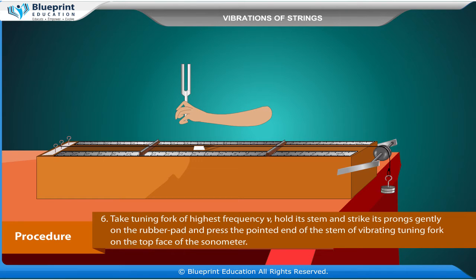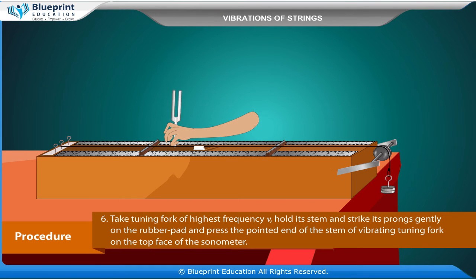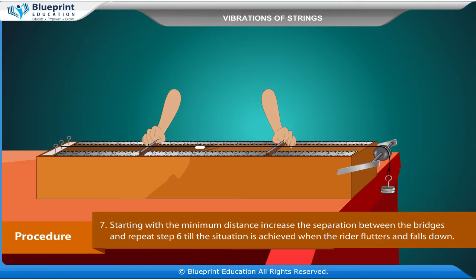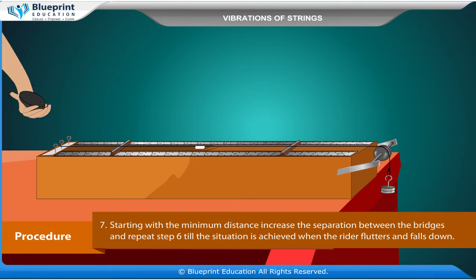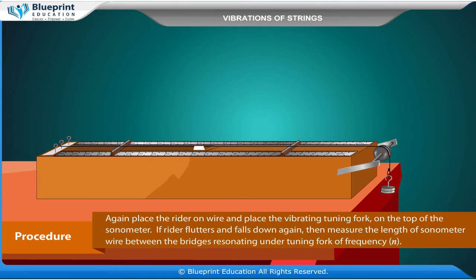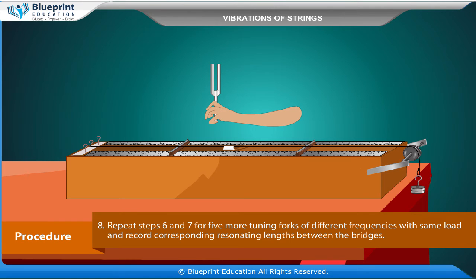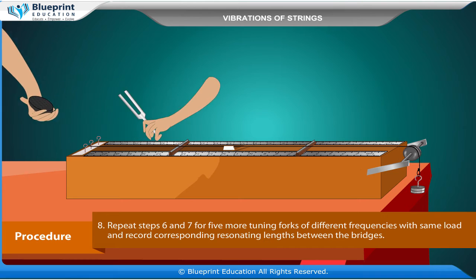Make a small V-shaped paper rider and place it inverted on the wire, just in the middle of its length between the bridges. Take the tuning fork of highest frequency, hold its stem and strike its prongs gently on the rubber pad, and press the pointed end of the stem of the vibrating tuning fork on the top face of the sonometer. Starting with the minimum distance, increase the separation between the bridges and repeat until the rider flutters and falls down. Again place the rider on the wire and place the vibrating tuning fork on the top of the sonometer. If the rider flutters and falls down again, then measure the length of the sonometer wire between the bridges resonating under the tuning fork of frequency n.